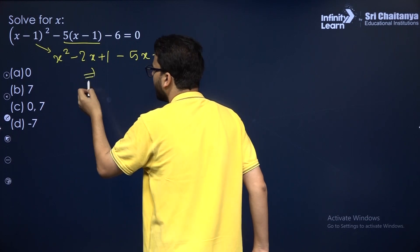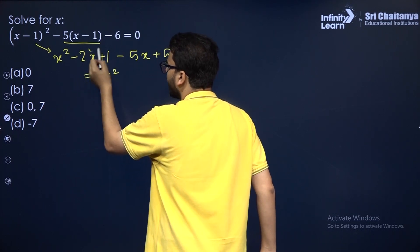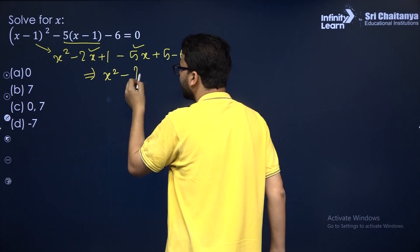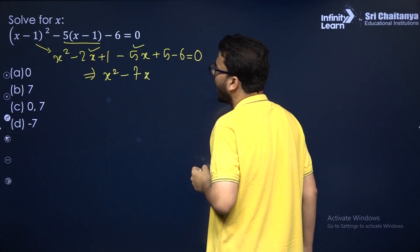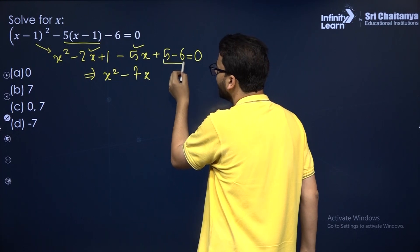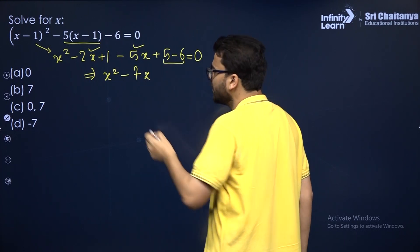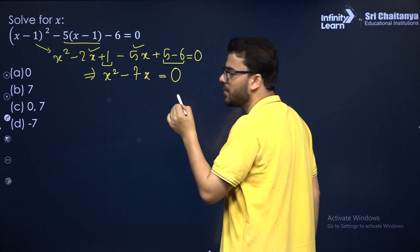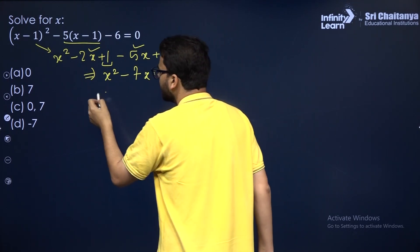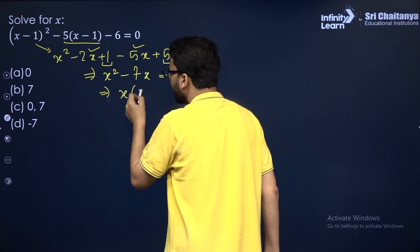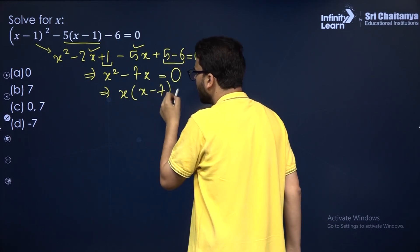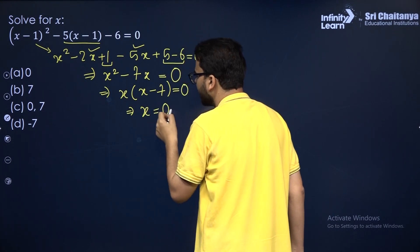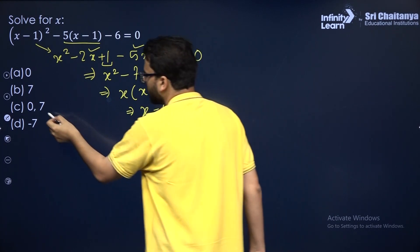Further simplifying: X² − 2X − 5X = X² − 7X, and the constants −1 + 1 = 0, so we get X² − 7X = 0. Taking X as common, X(X − 7) = 0. So the two roots of this quadratic equation are 0 and 7.